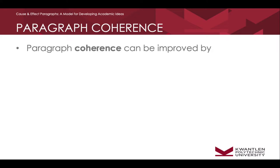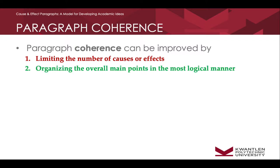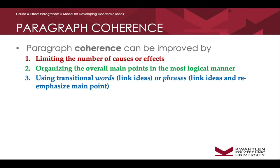Paragraph coherence is how you get all the ideas to stick together so that the writing flows quite nicely. We'll talk about four techniques. One: limit the number of causes and effects. Two: organize the overall main points in the most logical manner. Three: use transitional words or phrases to link ideas and re-emphasize a main point. And four: use support sentences to identify causes or effects.